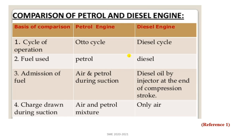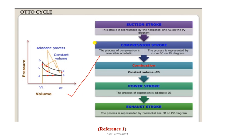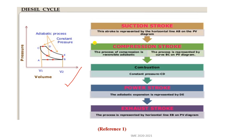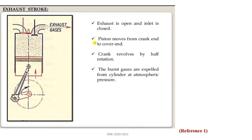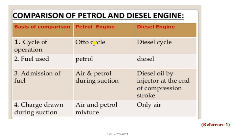For comparison: the cycle of operation for the petrol engine is the Otto cycle, which is a constant volume cycle. The Diesel cycle involves one constant pressure process and one constant volume process. This is the basic difference between the Otto cycle and Diesel cycle.